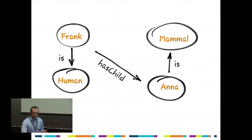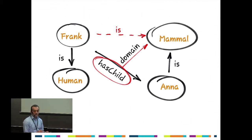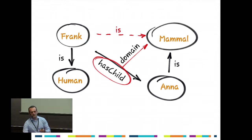But we can do more. The moment you say that "has a child" can only be applied to mammals, your reasoner — your computer — can logically deduce that if "has a child" can only apply to mammals and it's applied to Frank, then Frank must be a mammal as well.